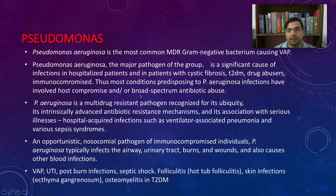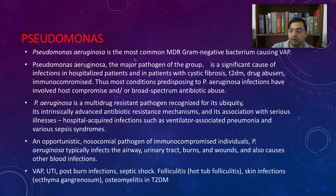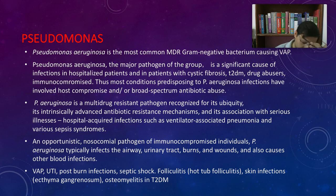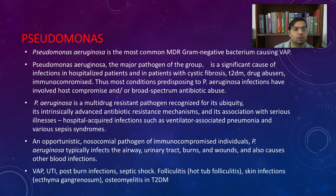Next is Pseudomonas. We have already studied Pseudomonas in respiratory infections — it is the most common gram negative bacteria causing ventilator-associated pneumonia. When a person is in the ICU on a ventilator, they are at the most risk of catching pneumonia caused by Pseudomonas. It is a very dangerous, often multi-drug resistant bacteria.